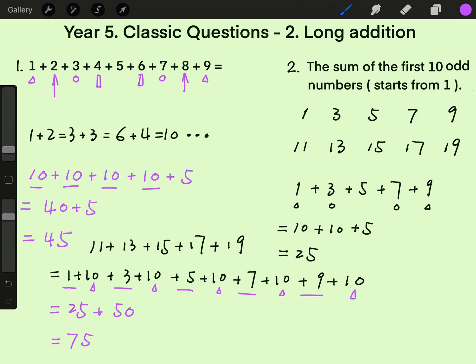So the sum of the first 10 odd numbers equals 25 plus 75, which is 100. Beautiful. I hope you enjoyed these two questions. Friends of 10 is a very useful tool in handling long addition questions.